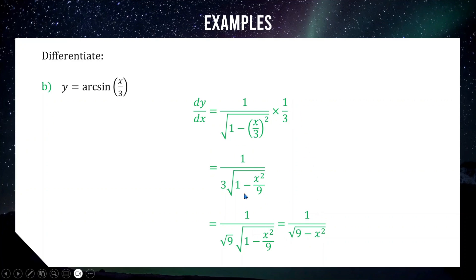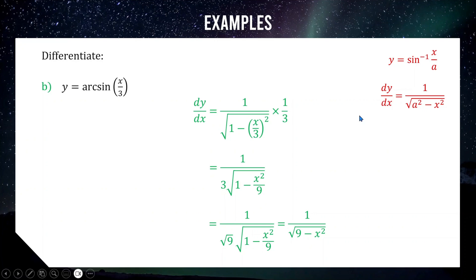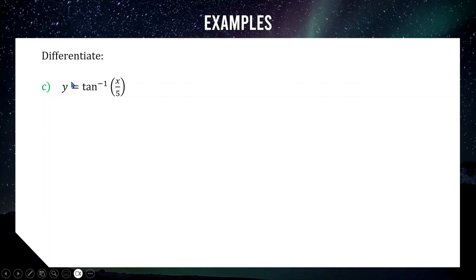That was a bit of a trek. I really recommend memorizing this shortcut: if you have sine inverse of x over a, the derivative is 1 over the square root of a squared minus x squared. This is not on the HSC reference sheet, but it turns a three-or-four-step question into a quick one-step answer. This shortcut will also be very useful when we get to integration in a week or two — trust me, it's worth memorizing.